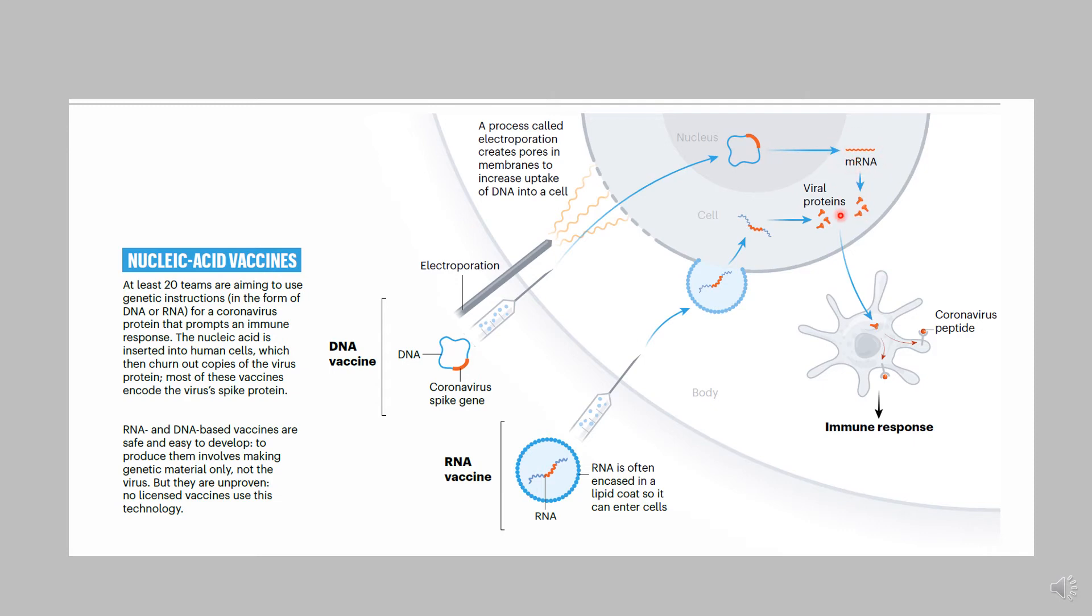Once it's taken up, a DNA vaccine then will get translated into messenger RNA. The messenger RNA will form proteins, in this case forming more of the spike protein. The spike protein then gets chewed up by an antigen-presenting cell. These viral proteins are going to be taken up and then help initiate an immune response.